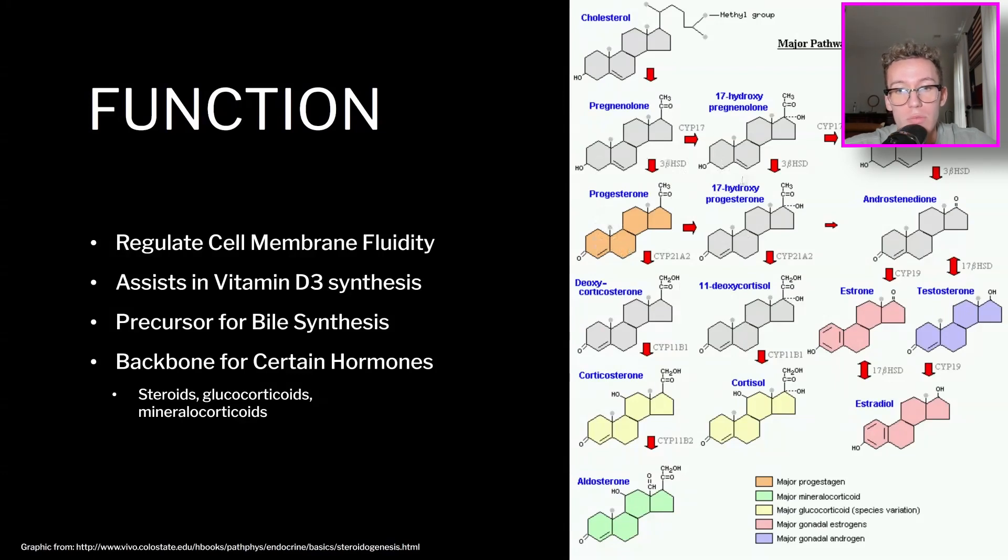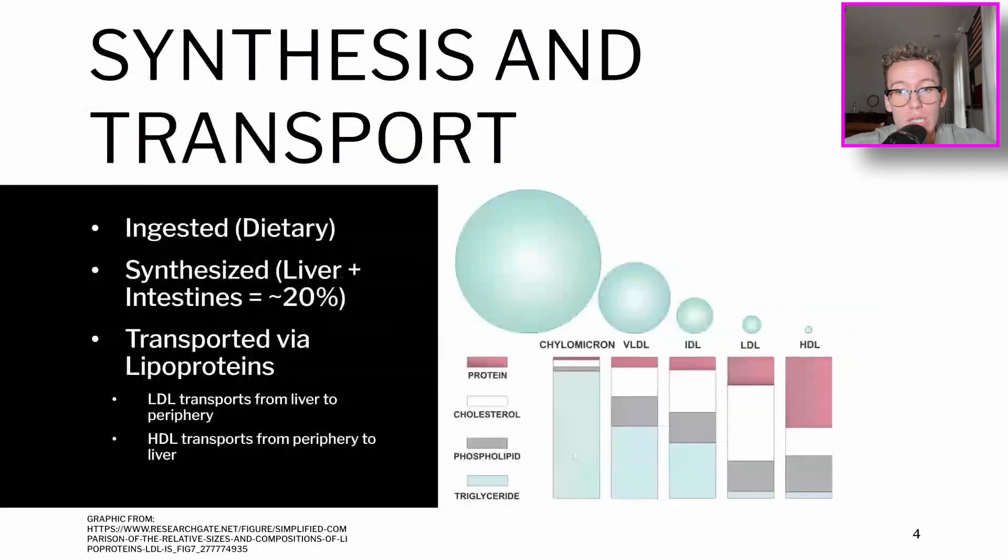So cholesterol is both ingested dietary and synthesized by every single cell in our body. Out of the synthesized cholesterol, approximately 20% comes from the liver and the intestines, and it is auto-regulated based on the amount of cholesterol that you consume. So that means when you're consuming higher levels of dietary cholesterol, your body is going to make less because you don't need it. Like I mentioned before, because cholesterol is hydrophobic, it is transported in the blood via proteins.